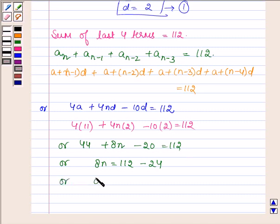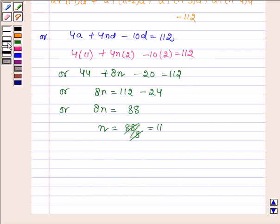Which implies that 8N is equal to 88. Or N is equal to 88 upon 8 which is equal to 11. And that is the number of terms is equal to 11.